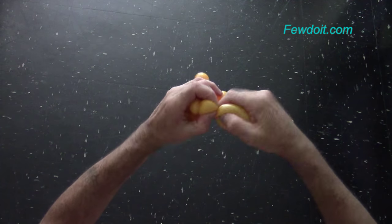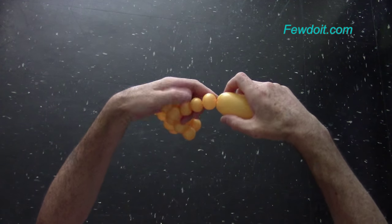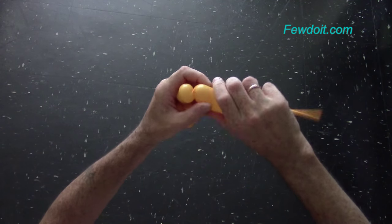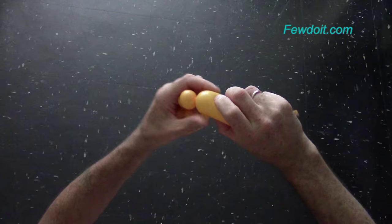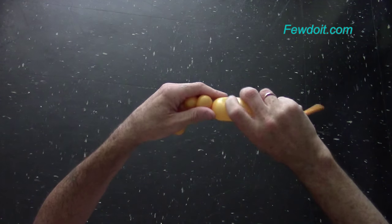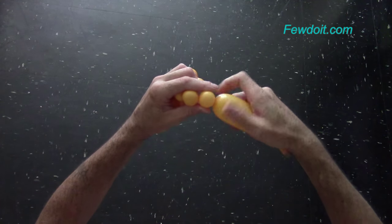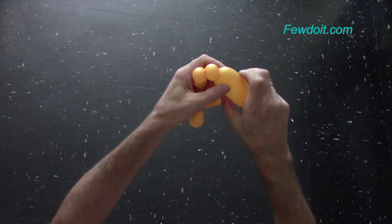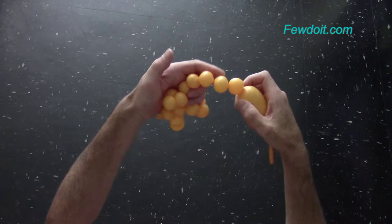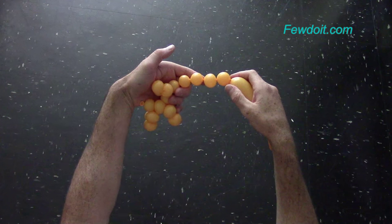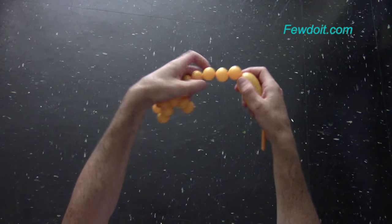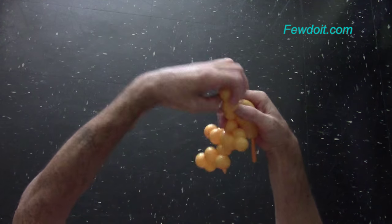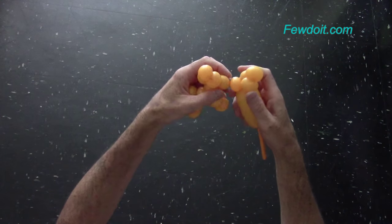Now we are making the second dog the same size, same number of bubbles. Twist a chain of the next 4 bubbles. So the first dog we made working from the tail. And the second dog we work starting from the muzzle of the dog. It is the only difference. Let's lock both ends of the chain of the last 3 bubbles in one lock twist.